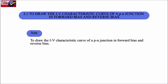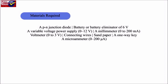Aim: To draw the IV characteristic curve of a PN junction in forward bias and reverse bias. Materials required: A PN junction diode, battery or battery eliminator of 6V, a variable voltage power supply (0–12V), a milliammeter (0–200mA), a voltmeter (0–3V), connecting wires, sandpaper, a one-way key, and a microammeter (0–200μA).